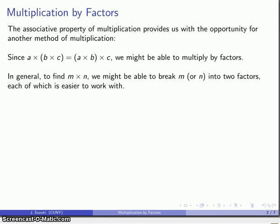In general, it means that if I want to find m times n, if it's easy for me to break one of these two numbers into a bunch of factors which are individually easier to work with, this multiplication by factors is going to be more efficient.